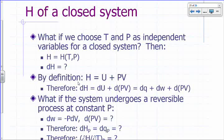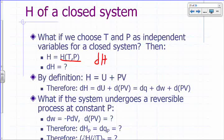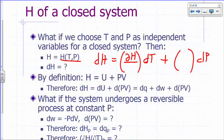Let's move on to enthalpy of a closed system. What if we choose T and P as independent variables? Then we can say enthalpy is a function of temperature and pressure. T and P are the convenient pair of independent variables. So what would be our expression for dH?